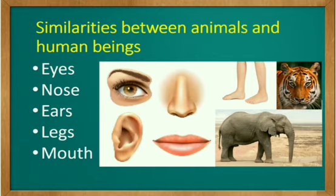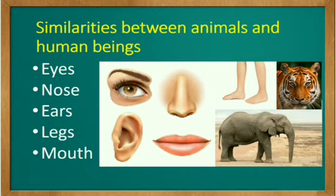Both human beings and animals have eyes, and both can see with their eyes. Nose — we breathe with our nose and we can sense the smell. Both human beings and animals can listen through their ears. Legs — both human beings and animals can move with their legs. Next is mouth — both human beings and animals can eat; we use our mouth to eat. These are a few common things between animals and human beings, and both of them are living beings.